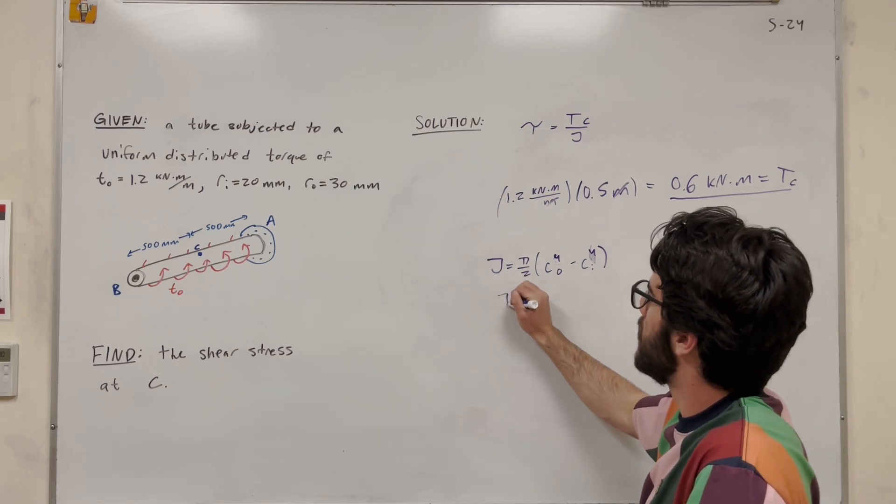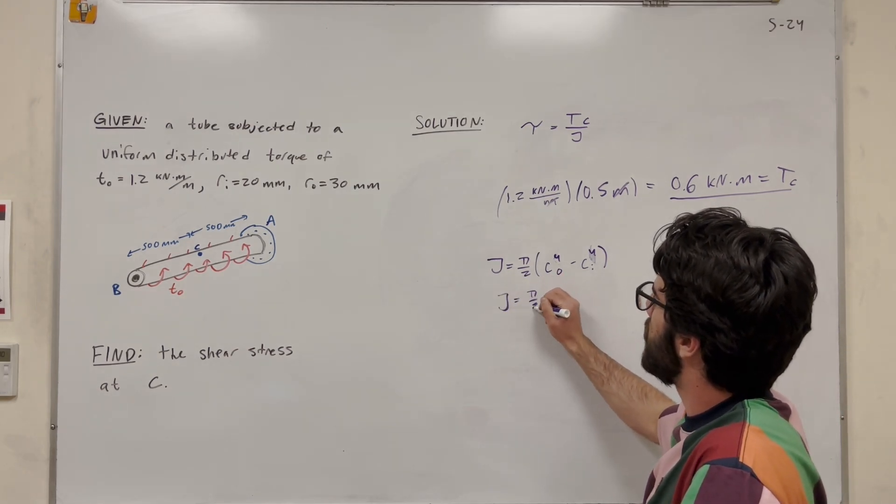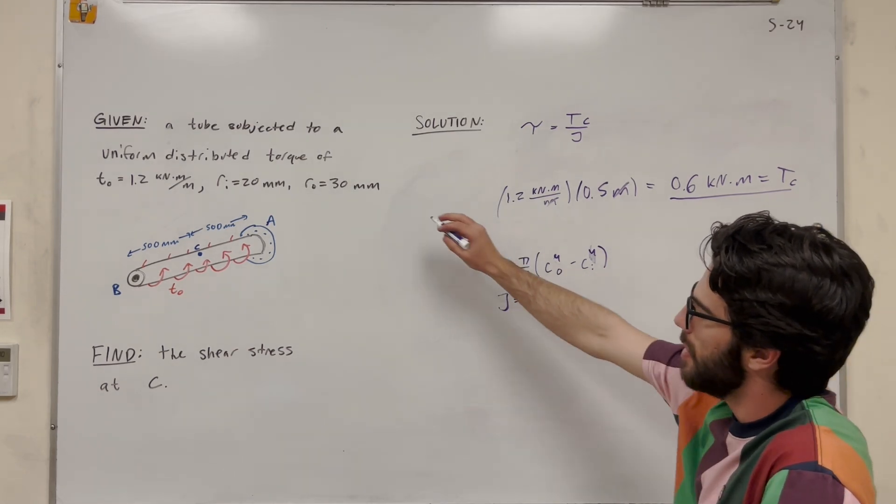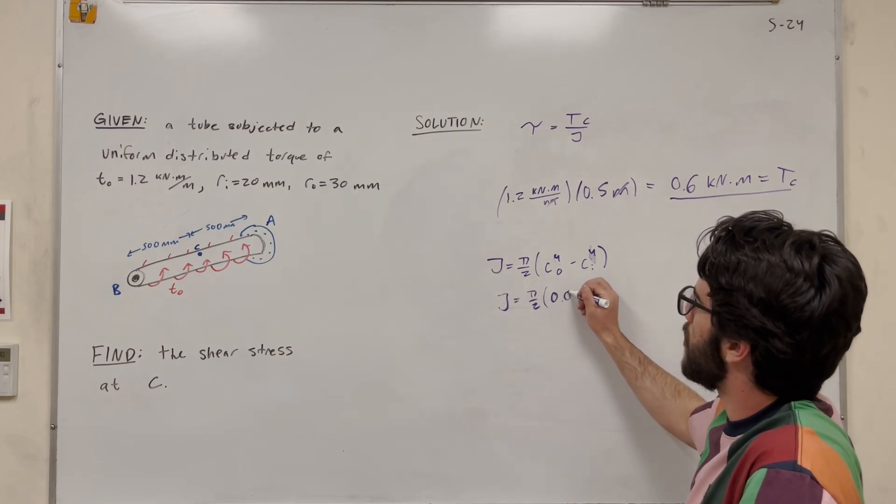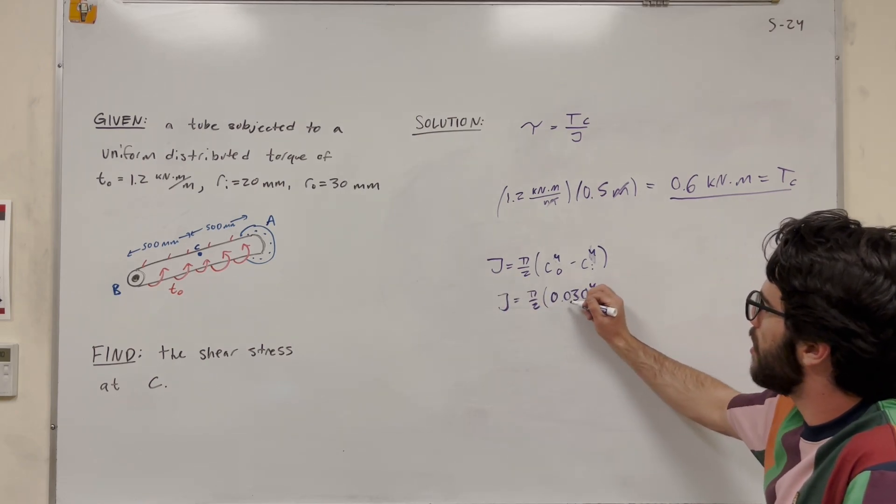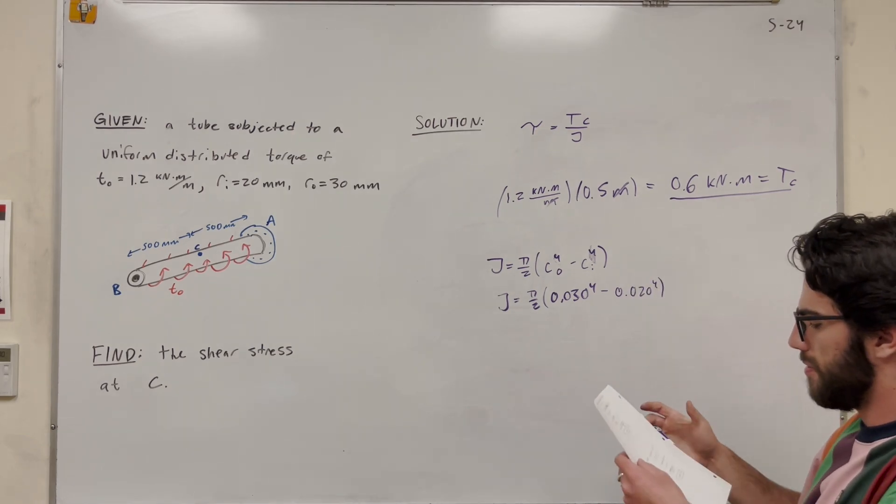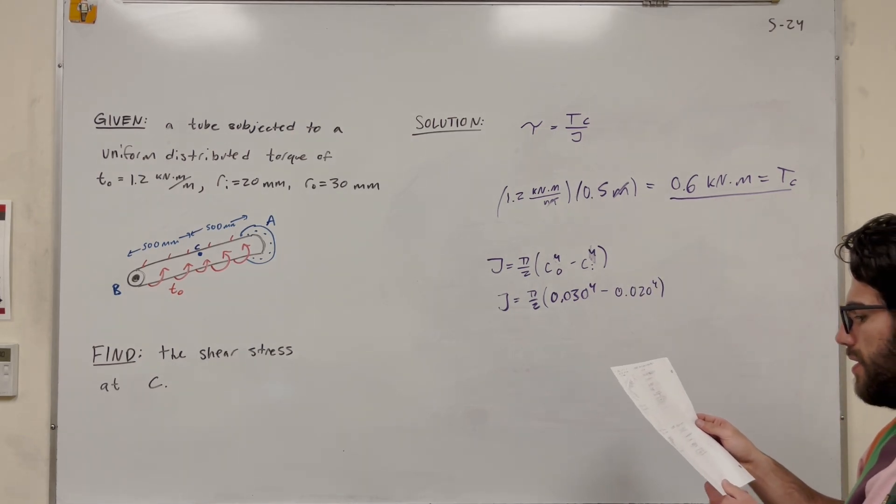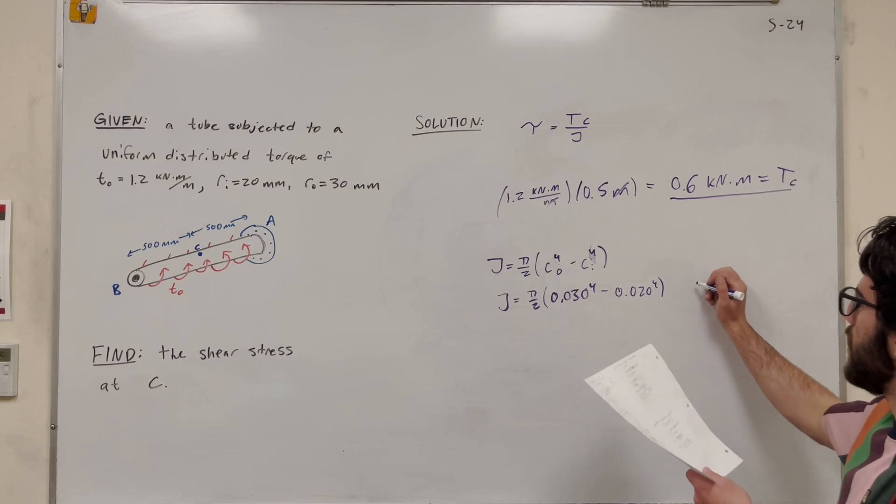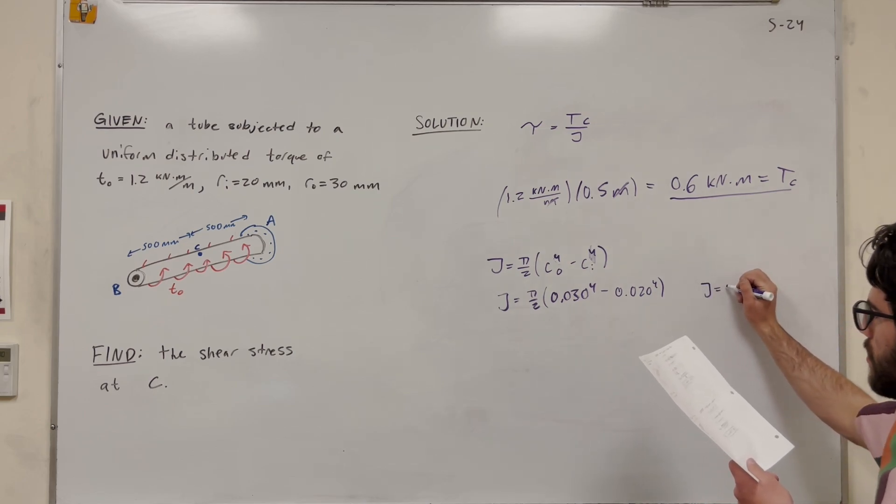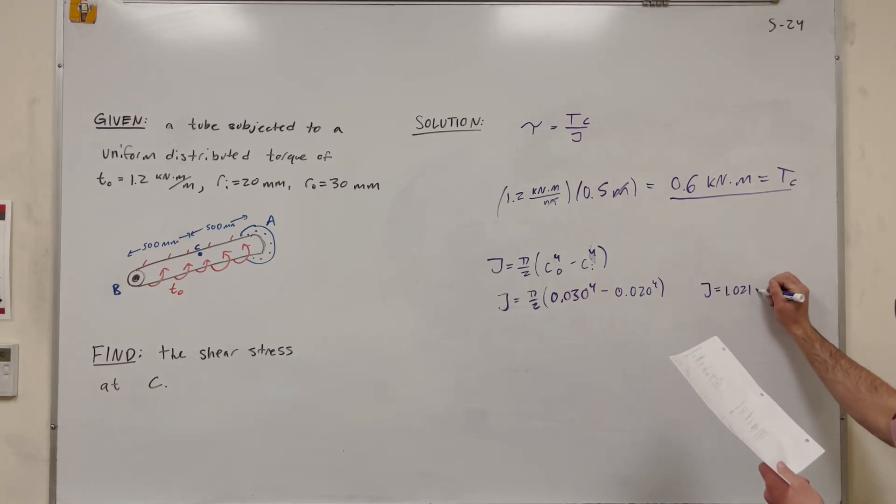So let's plug in our numbers. Pi over 2. Outer radius, 30 millimeters, so 0.030 to the 4th. Then the inner radius, 0.020 to the 4th. All right, so then you're going to solve this. You're going to get that J is equal to 1.021 times 10 to the negative 6th meters to the 4th.